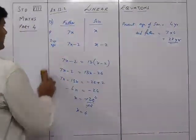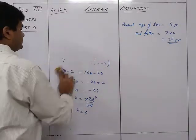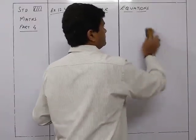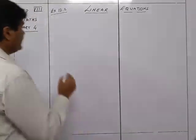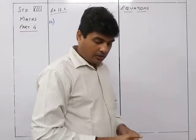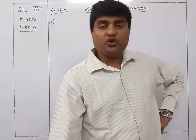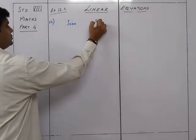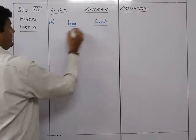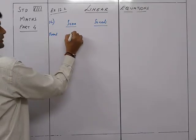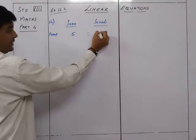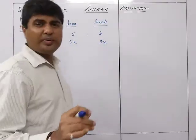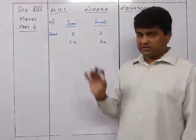Sum number 14 is again based on ages. The ages of Sona and Sonali are in the ratio 5:3. Since it's a ratio, we write their present ages as 5x and 3x respectively.